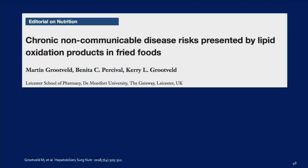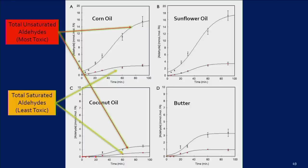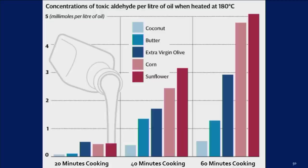Martin Grootveld and colleagues in the UK cooked these lipids and measured the number of toxic aldehydes. Corn oil and sunflower oil had really high total unsaturated and saturated aldehydes versus coconut oil and butter. Looking at a histogram at 20, 40, and 60 minutes of cooking, the coconut oil and butter in light blue show very low toxic aldehydes, versus the corn and sunflower oil in pink and purple on the far right.